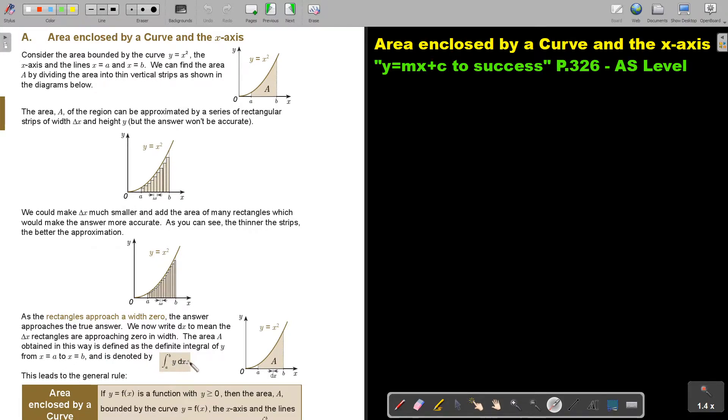The area A obtained in this way is defined as the definite integral of Y from A to B and is denoted by this. So basically, if we are going to integrate and we substitute B and A, we will get the real area underneath this curve.